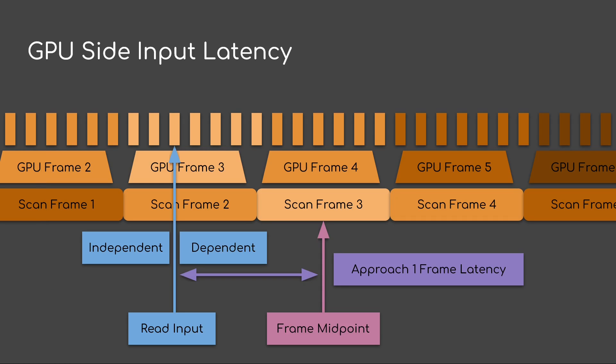Here's an example of GPU side input latency. On the top row we have the thread in the background pulling input and then writing the input into a buffer that the GPU can read. When the GPU wants to read input, after it finishes its view independent work, it fetches that memory and therefore the latency is a lot less. You'll notice I'm still using the frame midpoint here for scan out, and you see maybe I'm approaching one frame of latency if I grab input in the mid frame of where the GPU is generating the graphics.